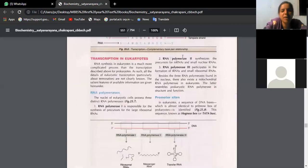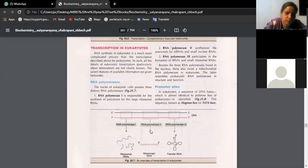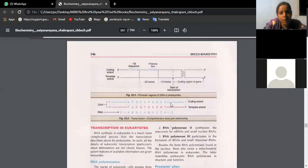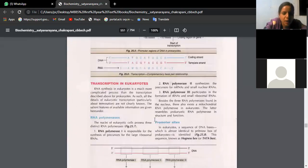So transcription in eukaryotes is actually a complicated process. So here we have different polymerases like RNA polymerase one, two and three. When you talk about RNA polymerase one, it helps in the synthesis of ribosomal RNA. Polymerase two, it helps in the synthesis of messenger RNA, mRNA and three helps in the synthesis of transfer RNA. So that's what promoter sites I told you in case of eukaryotes.